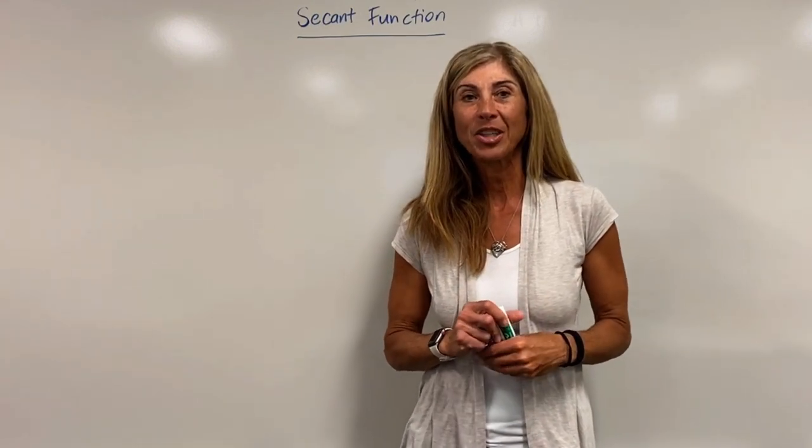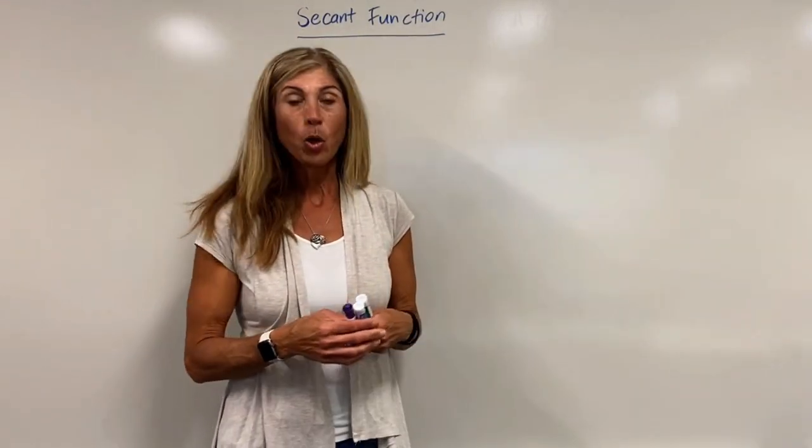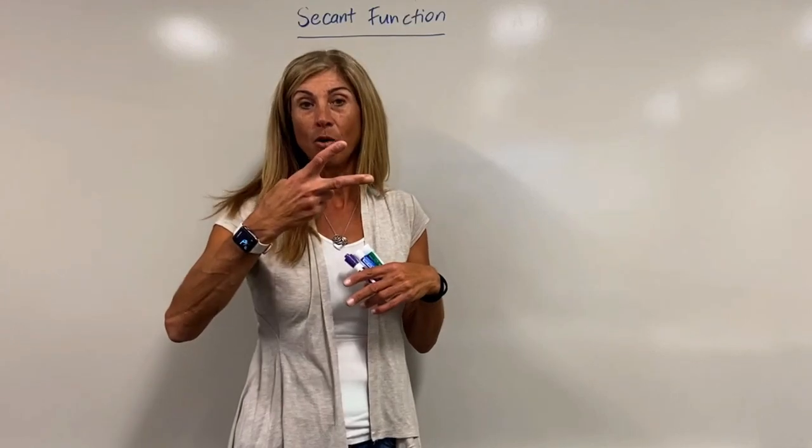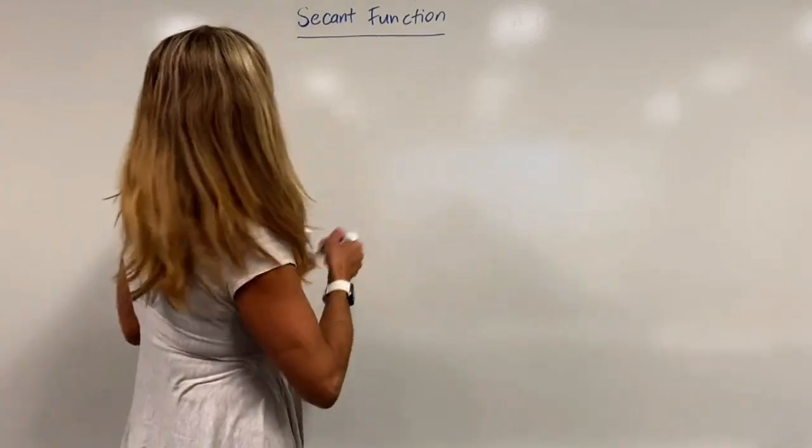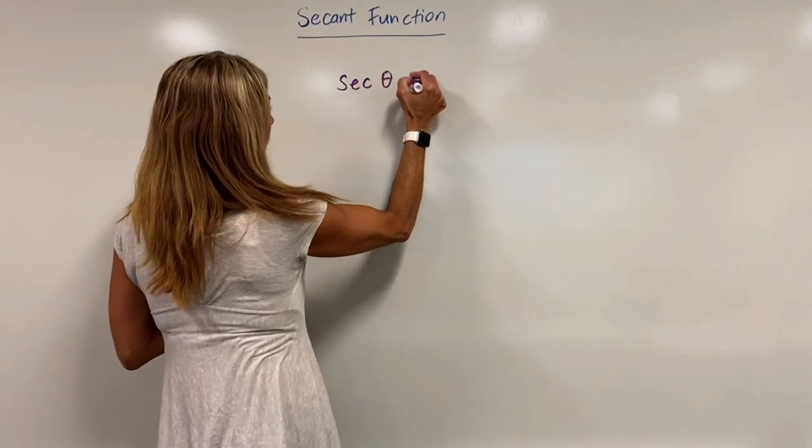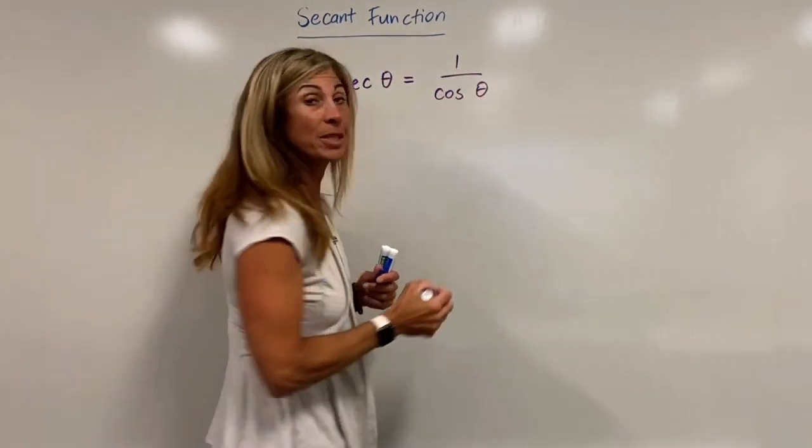Today we are going to look at our secant function. Recall that reciprocal functions are always one over the function. So our secant function happens to be the reciprocal of a cosine function.